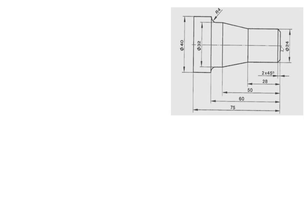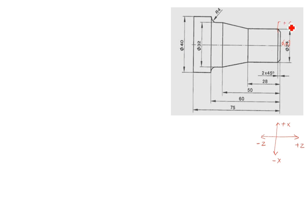In this CNC turning program, we start from 0,0. Here is plus Z, minus Z, minus X, and plus X. On this side, plus X is here, minus Z is here, plus Z is here, and minus X is on the downside. The program starts from 0,0.